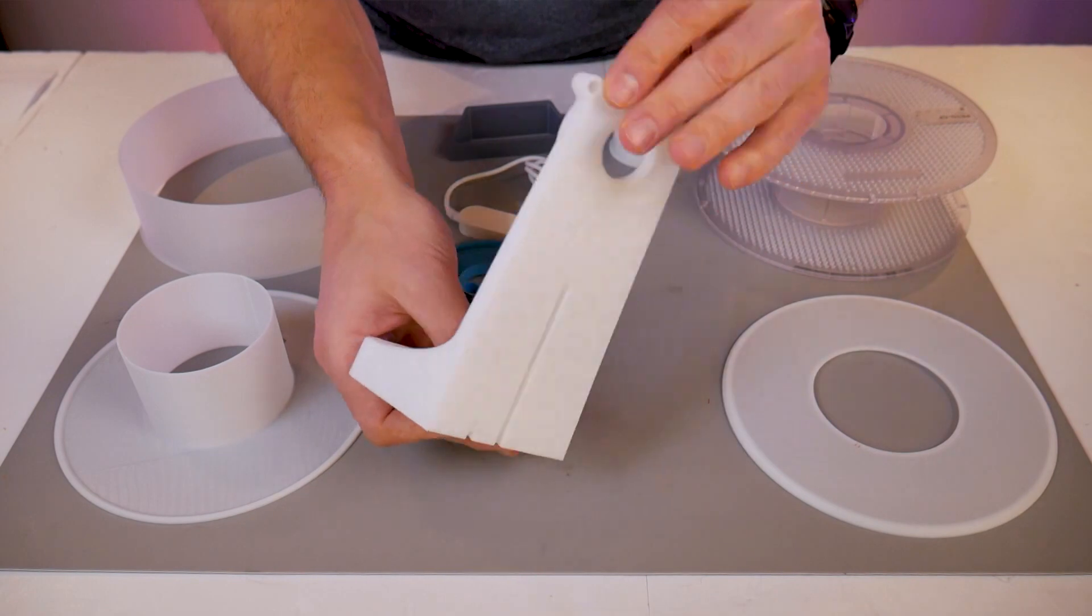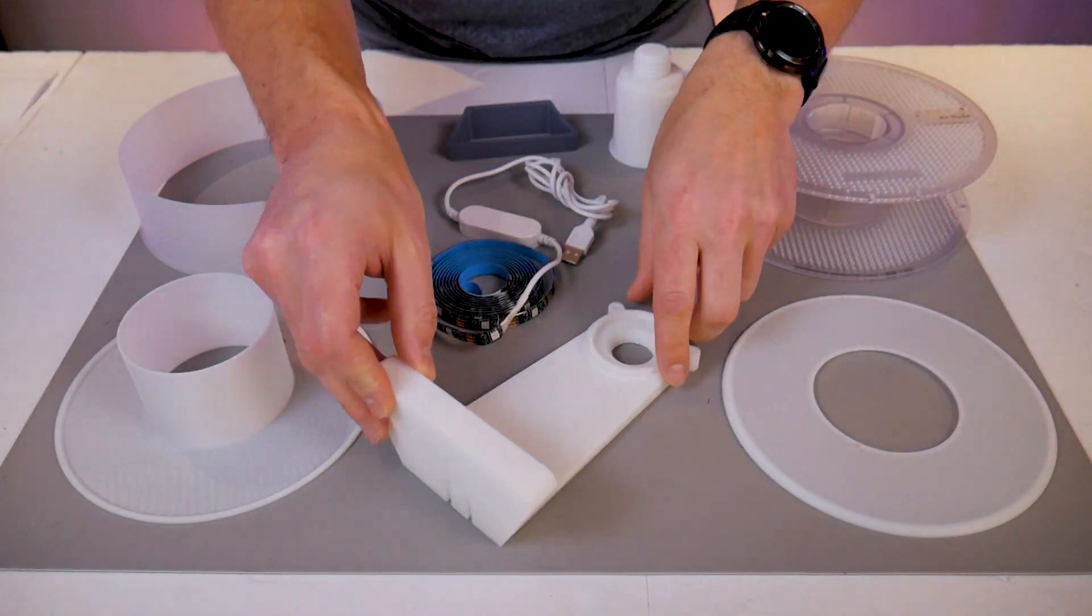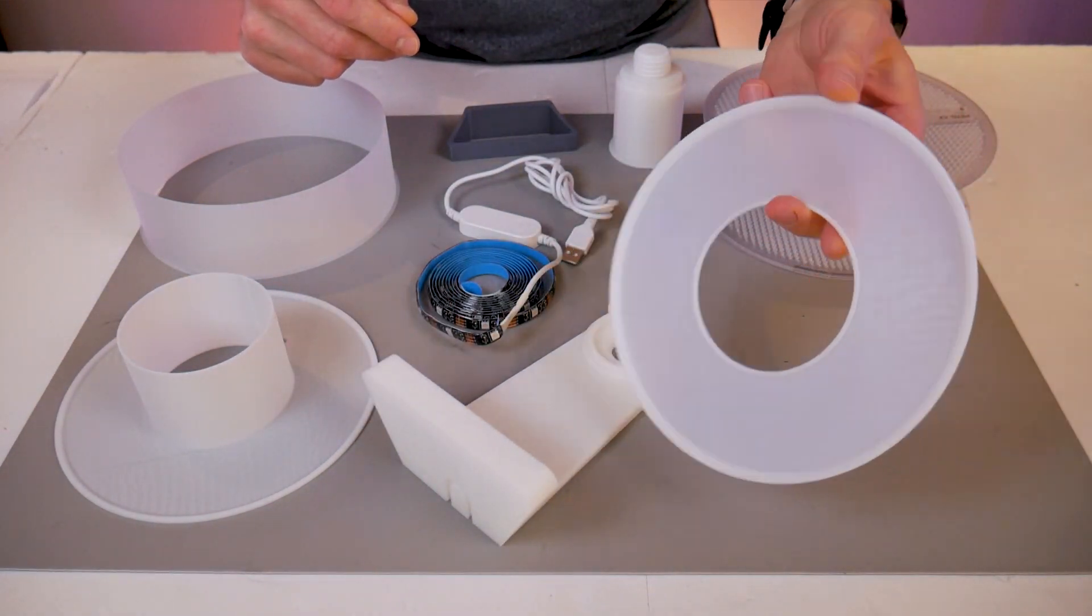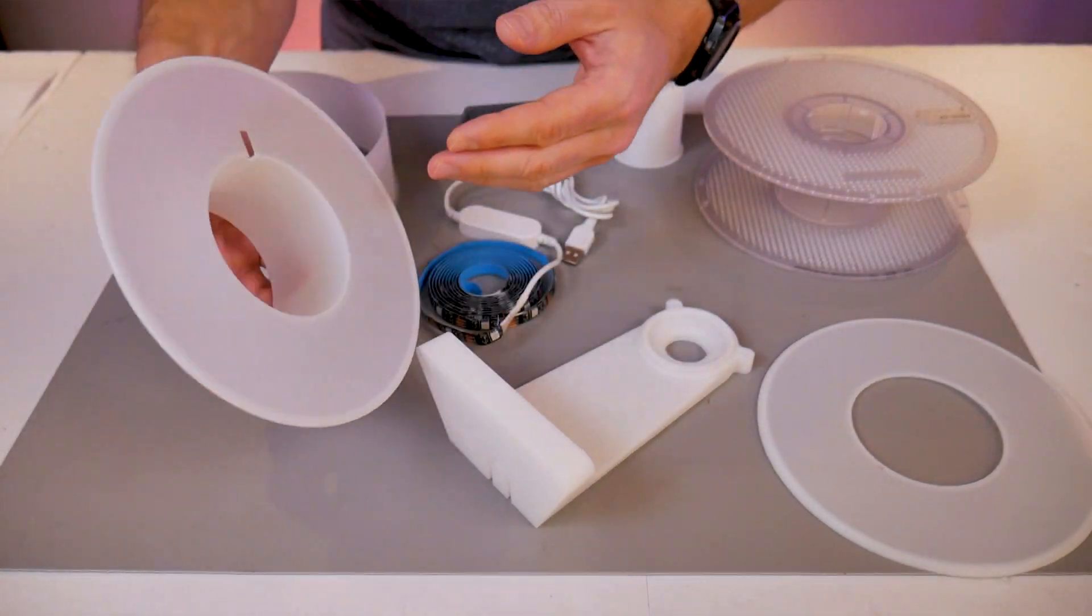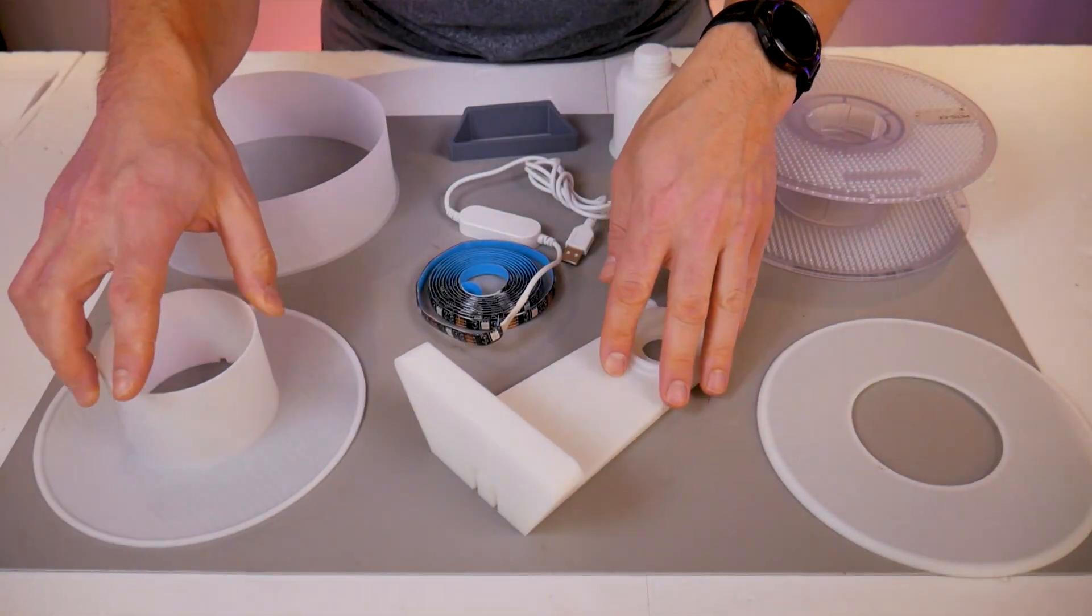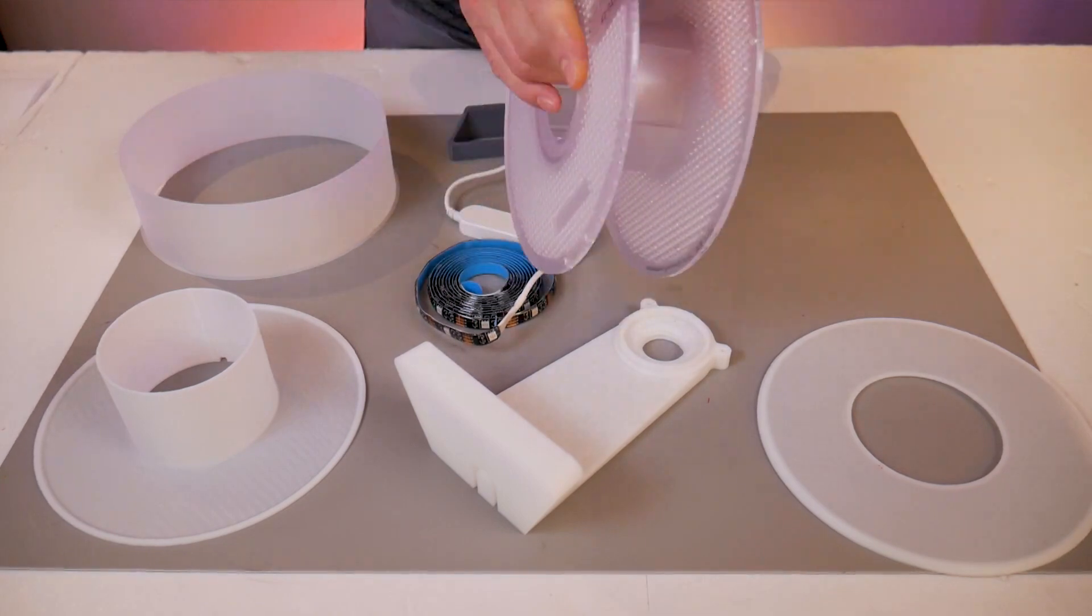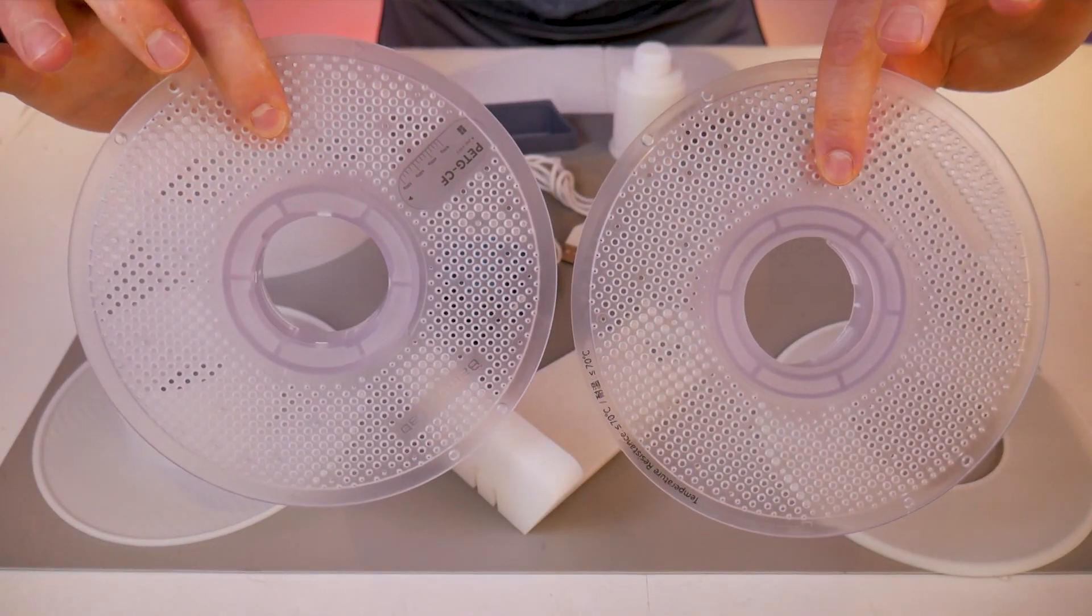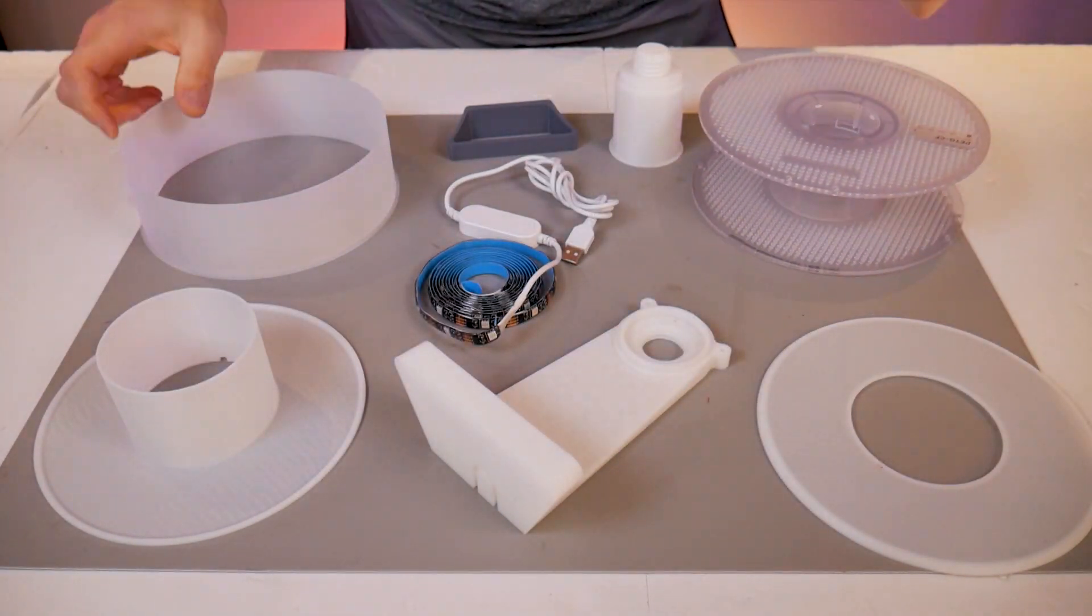We'll begin by taking a quick look at all the parts we're going to need for this build, and most of these parts are of course 3D printed. So we've got the main stand, front cover, back cover, and then in the top right we have the Bamboo Labs reusable spool.